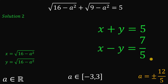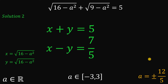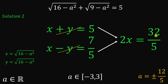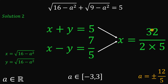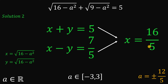Now we add the equations X plus Y equals 5 and X minus Y equals 7 over 5. This eliminates Y, giving 2X equals 32 over 5, because 5 plus 7 over 5 is 32 over 5. Dividing both sides by 2, and noting that 32 is 16 times 2, we get X equals 16 over 5.